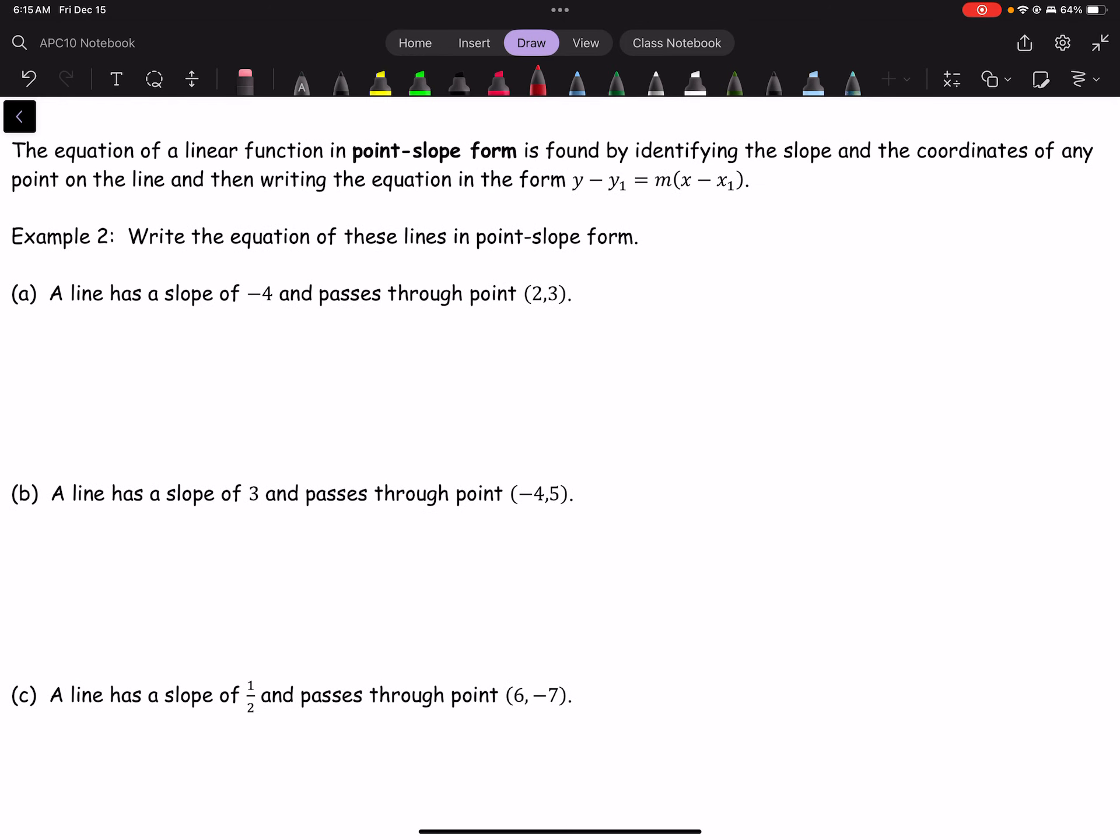The equation of a linear function in point-slope form. So what do we need for point-slope form? We need the point, and we need the slope. I said the point, I really meant a point. You just need a point along the line and plug it in. It is found by identifying the slope and the coordinates of any point on the line. And then we write the equation in the form of y minus y1 equals m, open brackets, x minus x1.